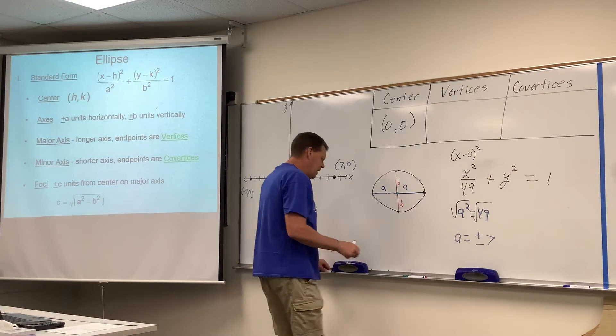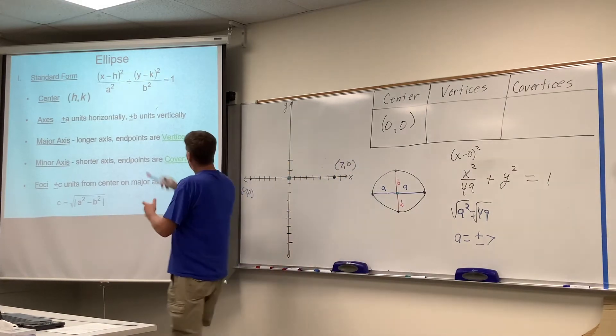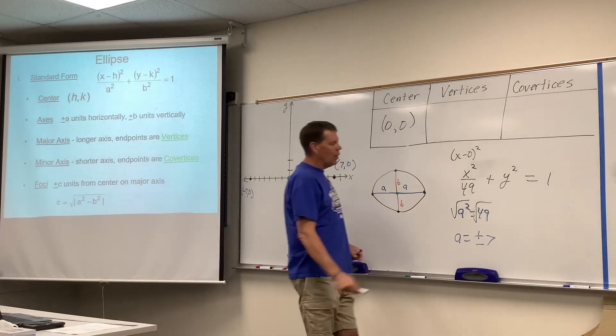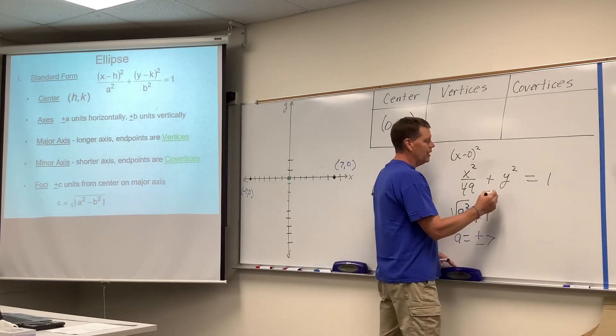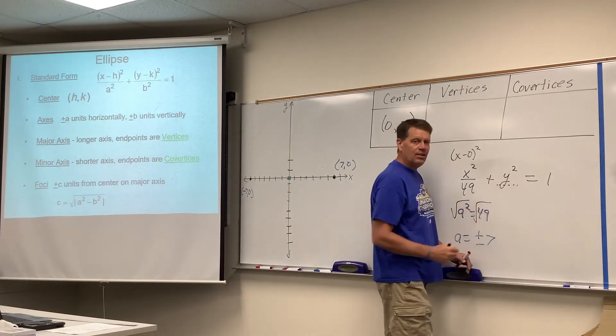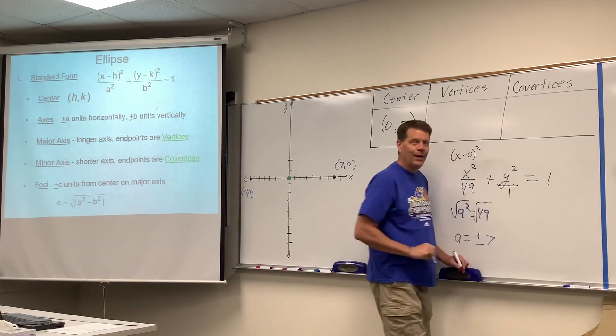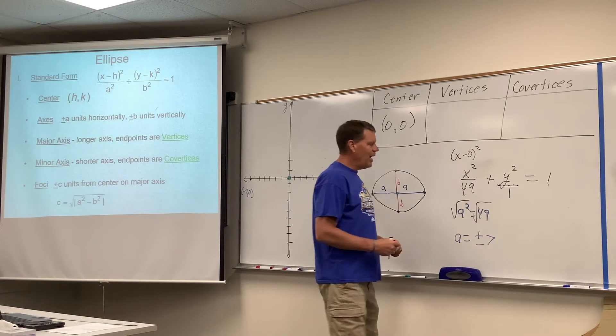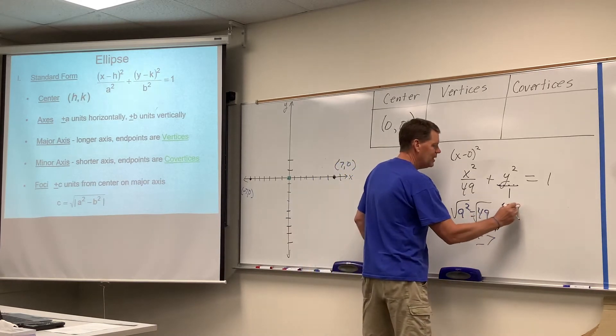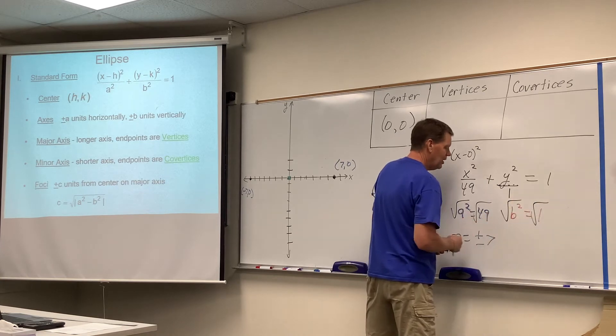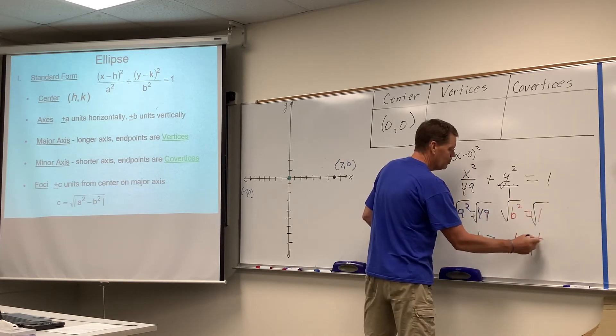All right, now, b squared is the denominator of the y fraction, and you'll hopefully recall with me that y squared is the same thing as y squared over 1, isn't it? So, that denominator, b squared is 1, and if we square root both sides, b would equal plus or minus 1, wouldn't it?